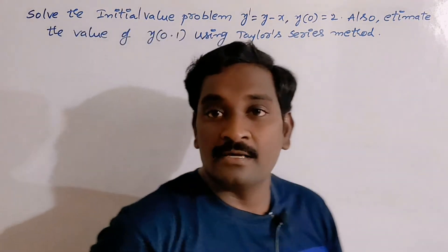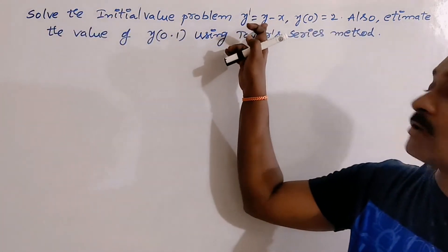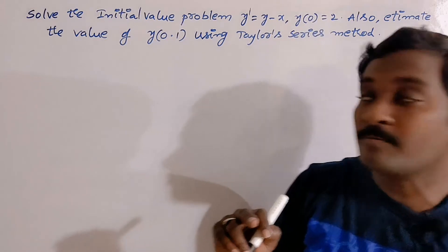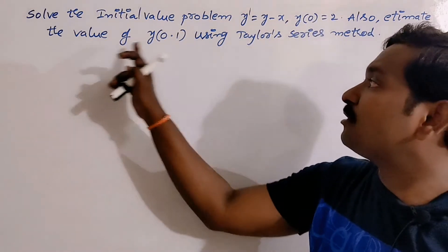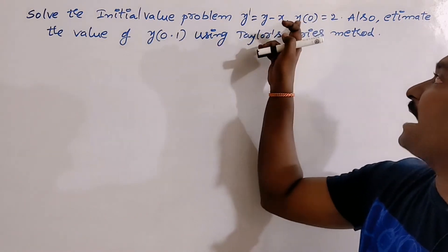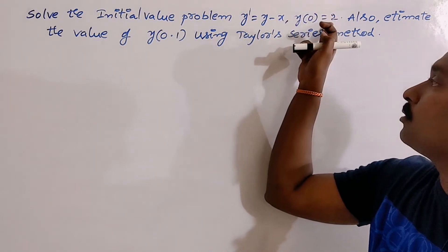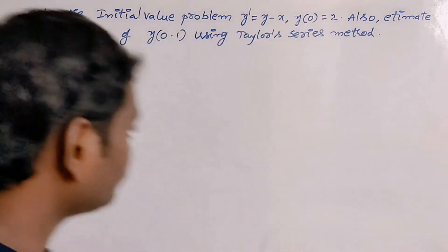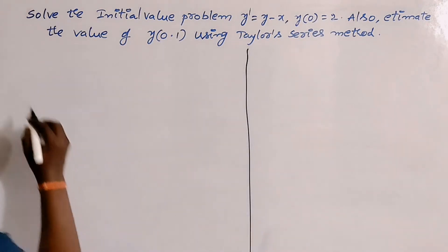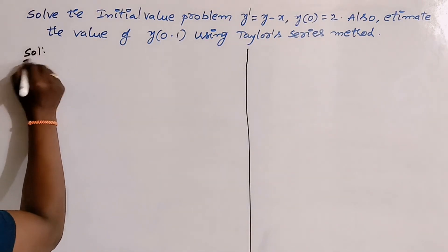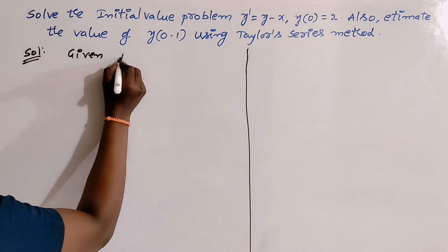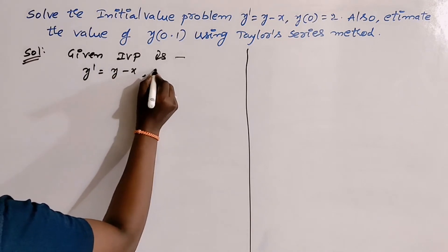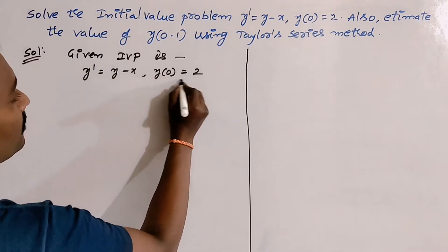The next problem in the Taylor series method: solve the initial value problem y' = y - x, with y(0) = 2. We have to estimate the value of y at x = 0.1. The given initial value problem is y' = y - x with the condition y(0) = 2.